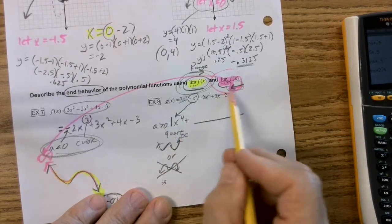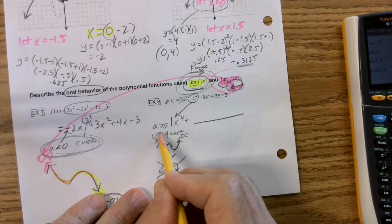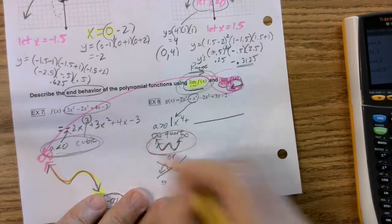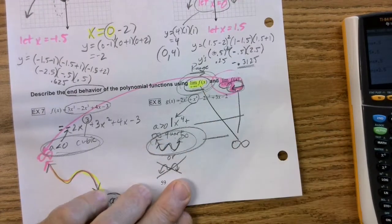But if I move right to left along this roller coaster, it's also going to go up to infinity. So for this one, both of my limits are positive infinity.